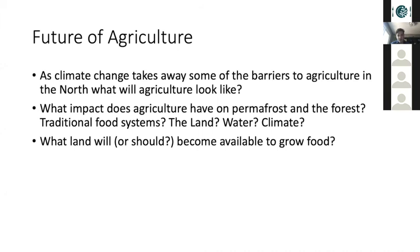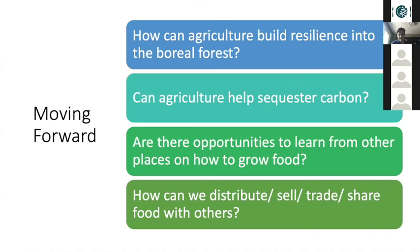What land will or possibly should become available to grow food? Agriculture wasn't on people's radars even about five years ago in the Northwest Territories. There's still not a lot of policy about how it's going to develop. So we're kind of at the ground floor, and it's really an interesting opportunity to start having these discussions with a range of stakeholders across the North. Moving forward, we want to focus on: how can agriculture build resilience into the boreal forest? Can agriculture help sequester carbon? Are there opportunities to learn from others about how to grow food? And most importantly, how do we distribute, sell, trade, and share food with others — how do we make sure food gets into the hands of people who need it most?